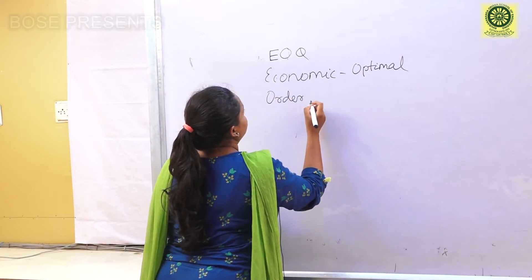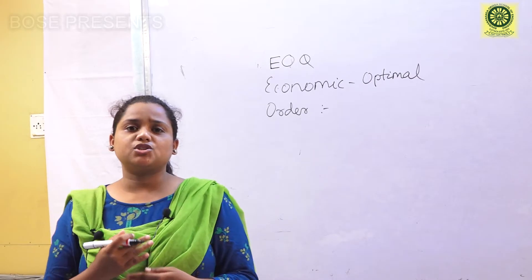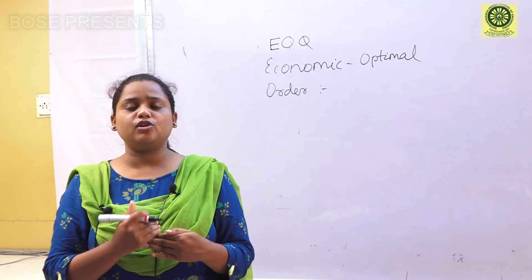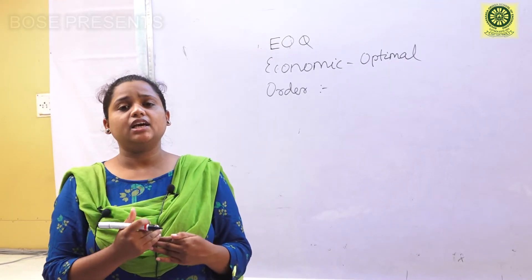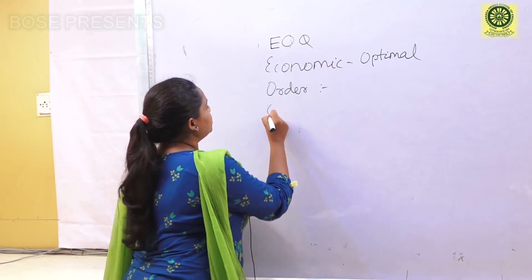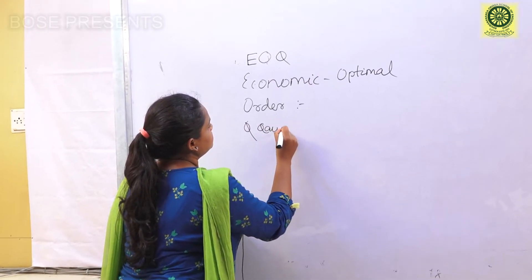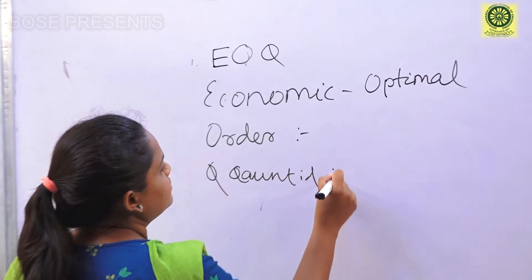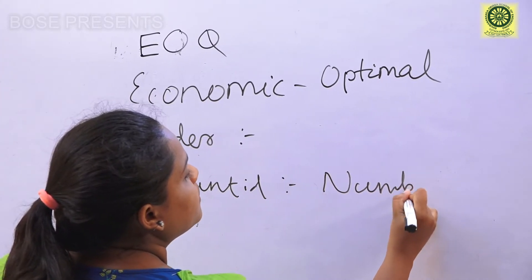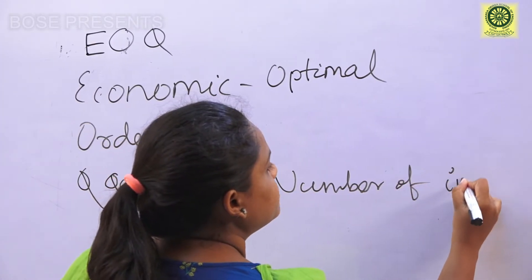The 'O' in EOQ means Order — how much we must order so that it will be economically viable or economically feasible for the company. The 'Q' means Quantity, which refers to the number of items.